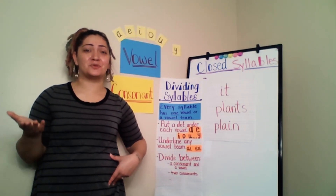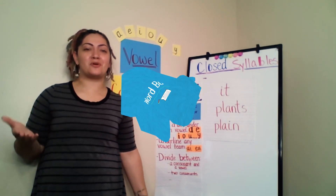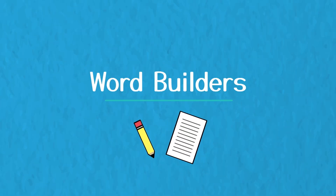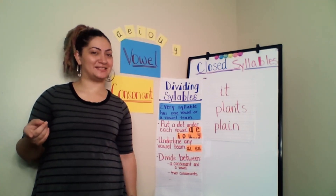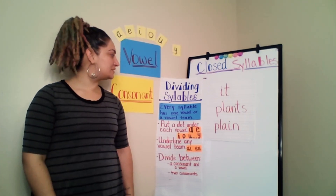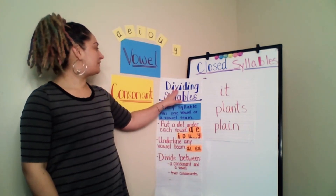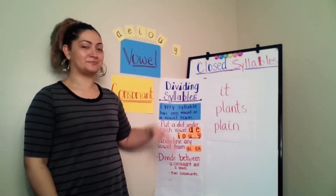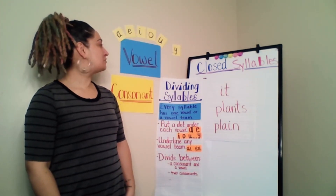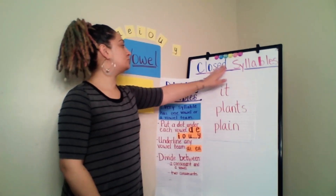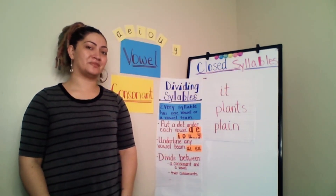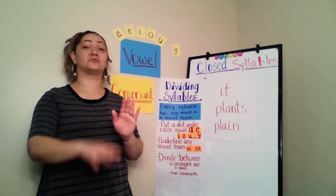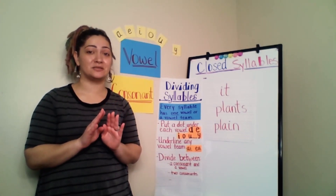When we start reading longer words with more than one syllable, it's important for us to look for patterns in words. The patterns will help us know how to read these words. Knowing about syllables will help us find these patterns. Today we're going to practice something called dividing syllables. We're also going to be practicing closed syllables. A closed syllable is when a consonant comes right after a vowel in a syllable.